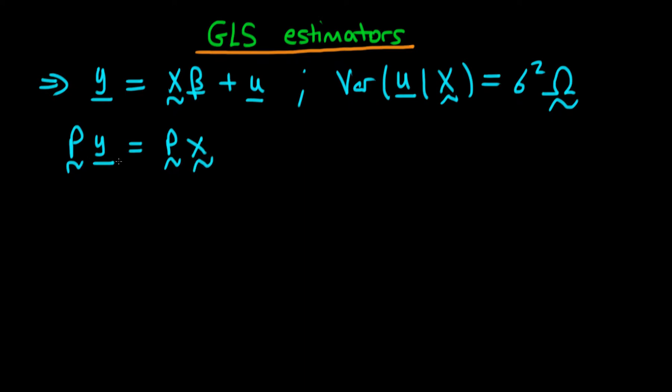So then we're going to have Py equals P times X times beta plus P times u. And the idea here is that the transformation matrix P should be such that the variance of Pu given X is just equal to sigma squared times the identity matrix, or at least something times the identity matrix, because then we have homoskedastic errors.